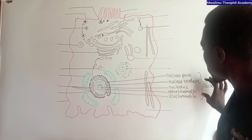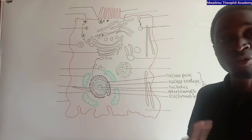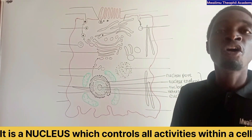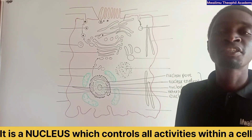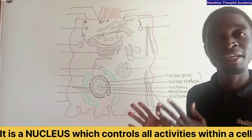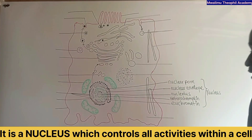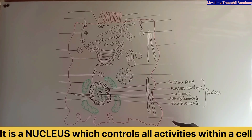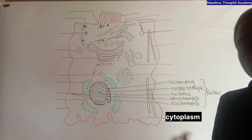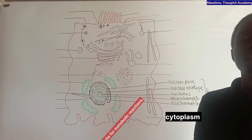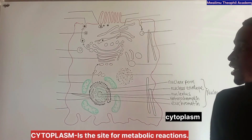In the part of the nucleus, you have to know that it is the nucleus which controls all activities within a cell. Another part is the cytoplasm. Simply, cytoplasm is the site for metabolic reactions.